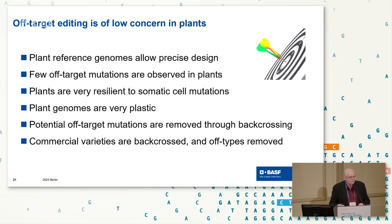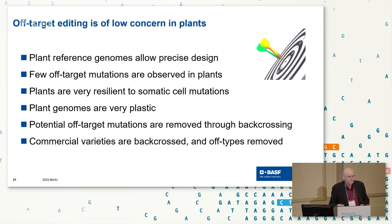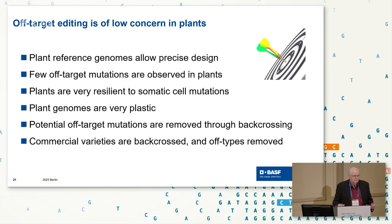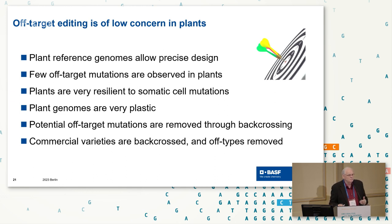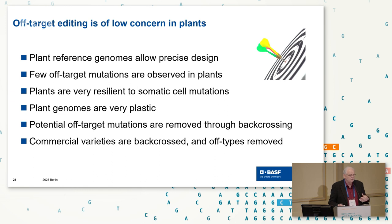On off-target editing: it is of low concern in plants. There's a poster downstairs on looking for off-target edits, and they didn't find any. For major crop plants, we have very good genomes, so we can test in silico whether there's a possibility of off-target edits. Plants are extremely resilient — the genomes are so plastic you can knock pieces out and they carry on. In most cases, commercial varieties are back-crossed, so even if there are any off-type edits somewhere in the genome, they'll disappear. It's not a problem in plants.